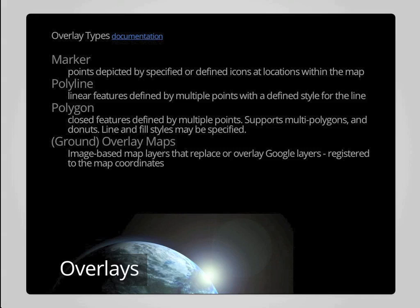There are also ground overlay map types, where you reference an image file available over the internet and superimpose it over the Google information. You register those images to the map coordinate system so they are anchored to the ground in the map interface. This is a way to display your own information as a base map, but you should carefully review the Google Maps API terms of service to ensure your overlay maintains some representation of Google's content.